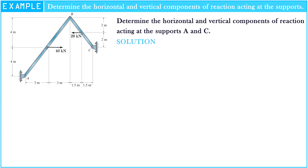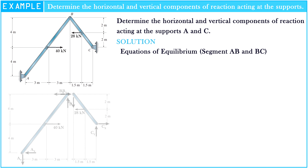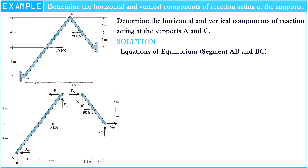After that, let's apply directly by writing the moment equation of equilibrium referring to the free body diagram of segments AB and BC respectively. The sigma of moment at point A is equal to zero. So, Bx multiplied by 8 meters, plus By multiplied by 6 meters, minus 40 kN multiplied by 4 meters is equal to zero.